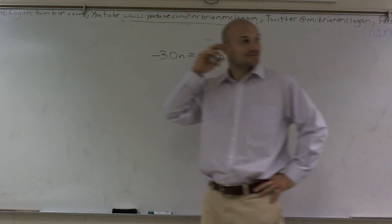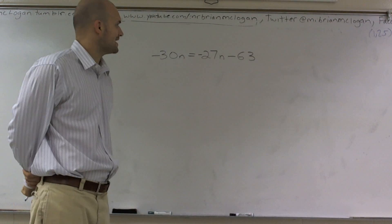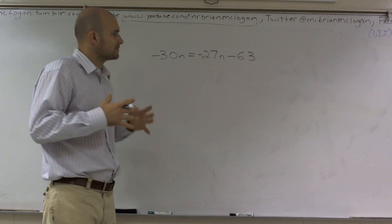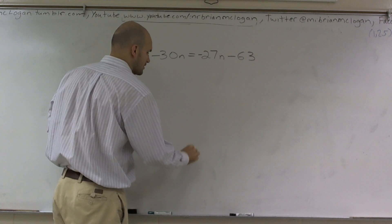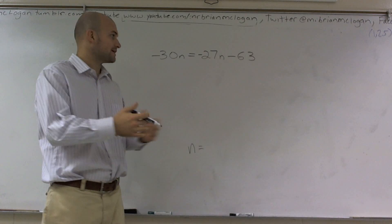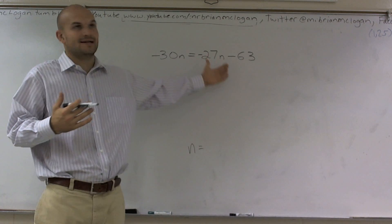What I'd like to do is show you how to solve this equation. We have variable n on the left and on the right side. Whenever we're solving an equation, remember we want to get n by itself. Right now we have a dilemma because we have an n on the left side and an n on the right side.